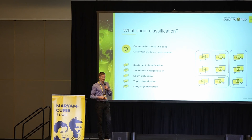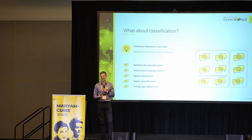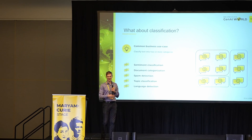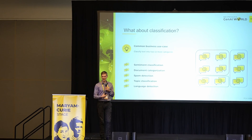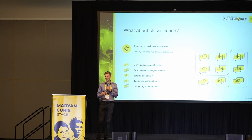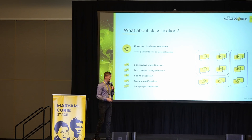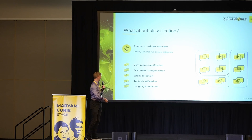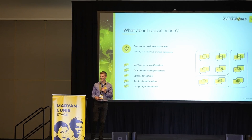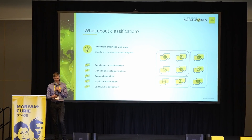So what about classification? Simple text classification happens a lot in different companies and businesses, and it is a very popular use case. What I want to explore is whether we can make use of LLMs or generative AI for text classification — things like sentiment classification, document categorization, spam detection, topic classification, language detection, and many more — just having a bunch of documents and needing to classify them into certain categories.